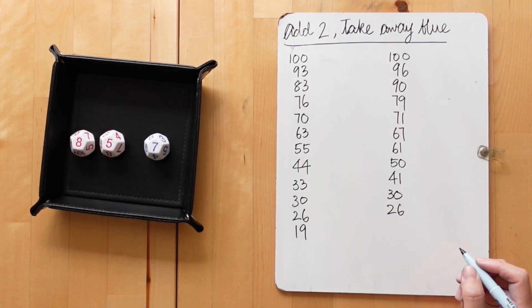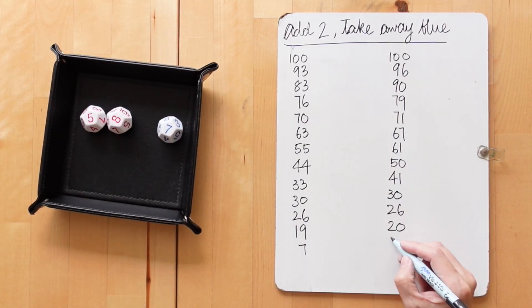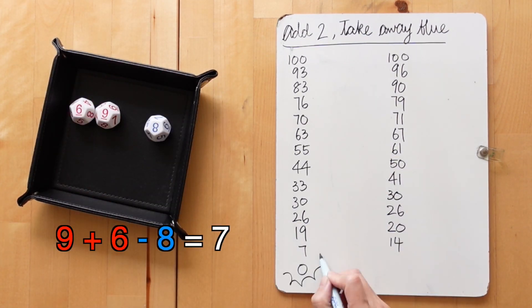Or for more subtraction practice, we start at 100 and then subtract till the first player to reach 0 wins.